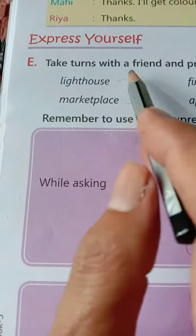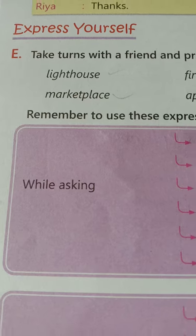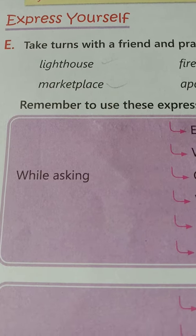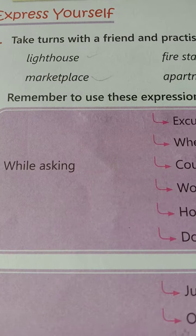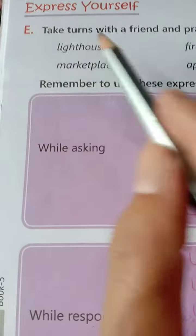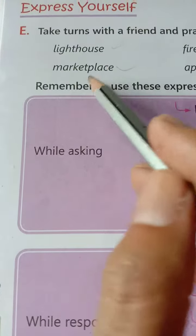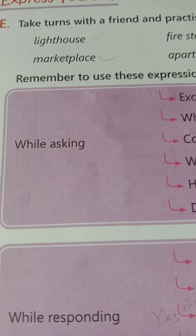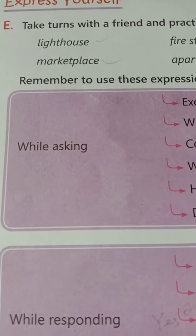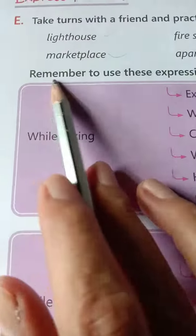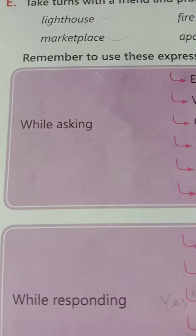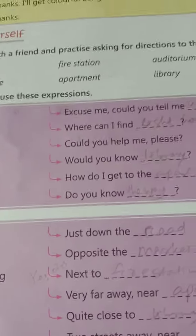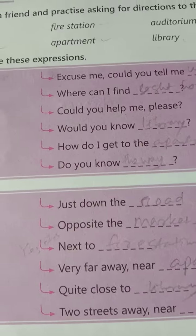Take turns with a friend and practice asking for directions to these buildings: lighthouse, marketplace, fire station, apartment, auditorium, library. Remember to use these expressions. I will do the task for you. Follow me.